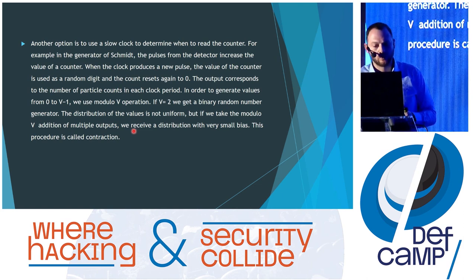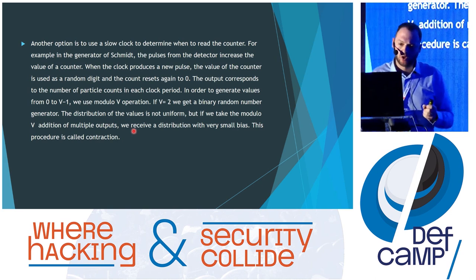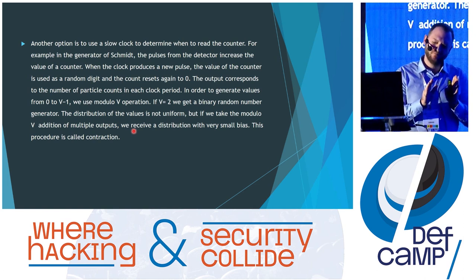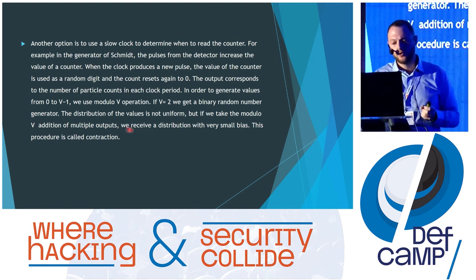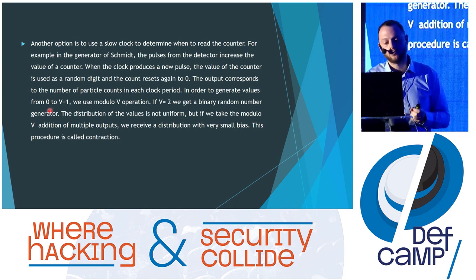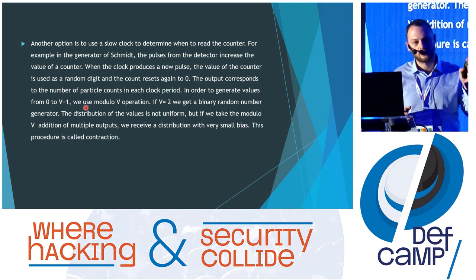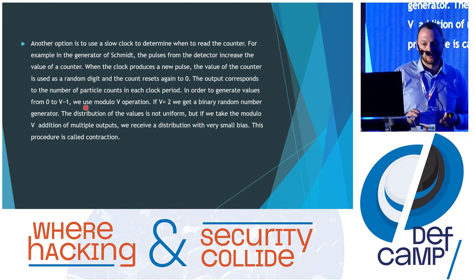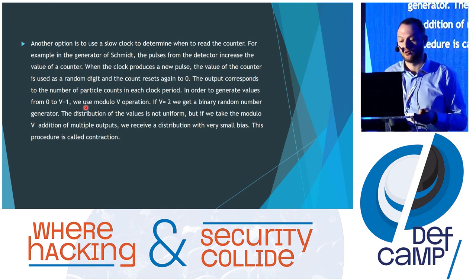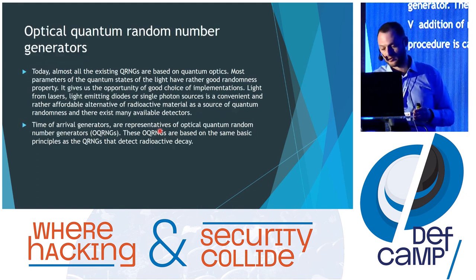When the slow clock produces a new pulse, the generator increments the counter, and in some period it resets it. If we need to get values from 0 to v−1 we just use the modulo-v operation. If we use v equal to two we can get binary values — zero and one. The distribution is also not uniform in this case, but when we use the modulo operation we get only a very small bias.